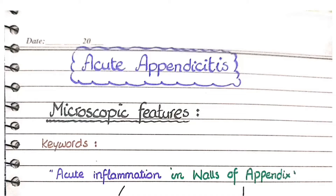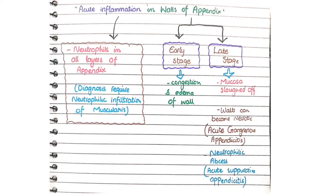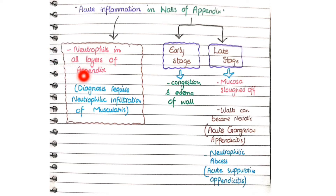In this video we will discuss the pathological features of acute appendicitis. The keywords to remember are acute inflammation in the walls of appendix. Acute inflammation is characterized by acute inflammatory cells — neutrophils — so you will see neutrophils in all layers of appendix.